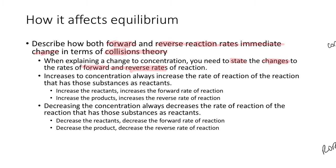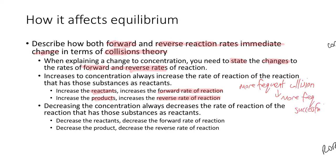Increases in concentration always increase the rate of reaction of the reaction that has those substances as reactants. Effectively, if you increase the reactants, you're going to increase the forward rate of reaction. But if you increase the products, you're going to increase the reverse rate of reaction because the products are the reactants of the reverse reaction. If you add more of the stuff, you're going to have more frequent collisions, and more frequent collisions lead to more frequent successful collisions. That is explaining it in terms of collision theory.